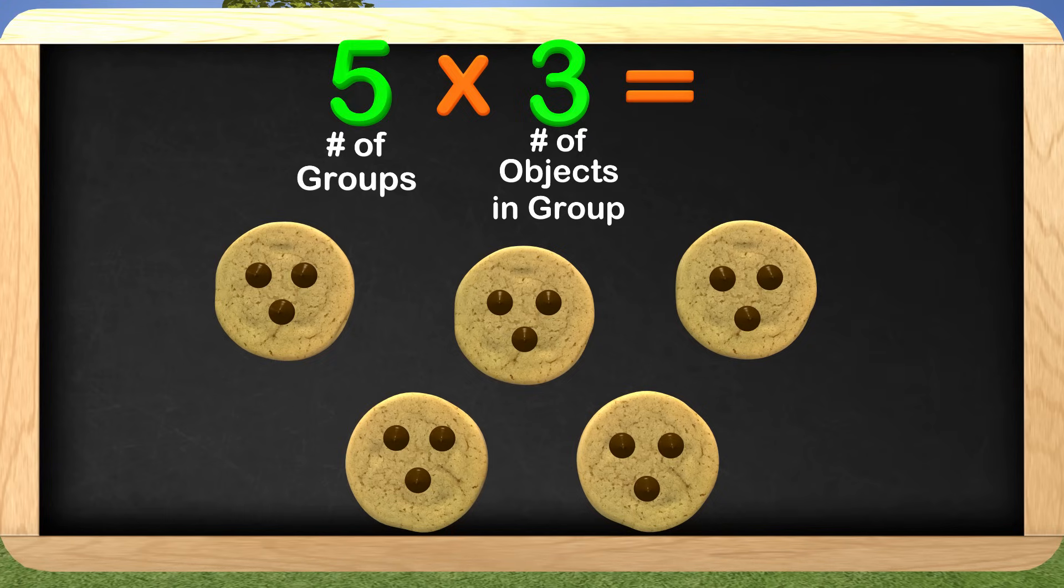When multiplying, we can look at the 5 as being the number of groups, and the 3 as the number of objects in the group. These cookies show this concept. There are 5 cookies, and they are the number of groups. On each cookie there are 3 chocolate chips, and they are the number of objects in each group.